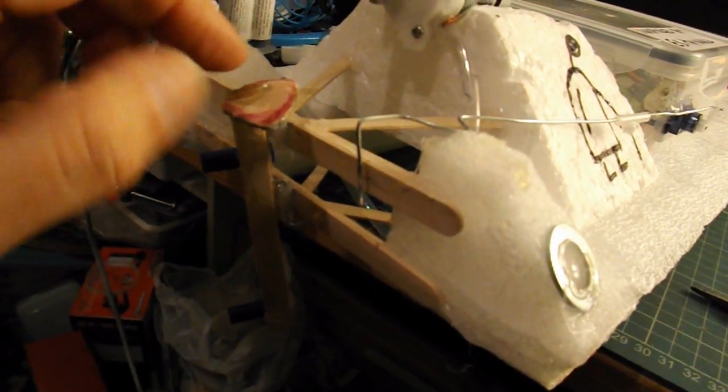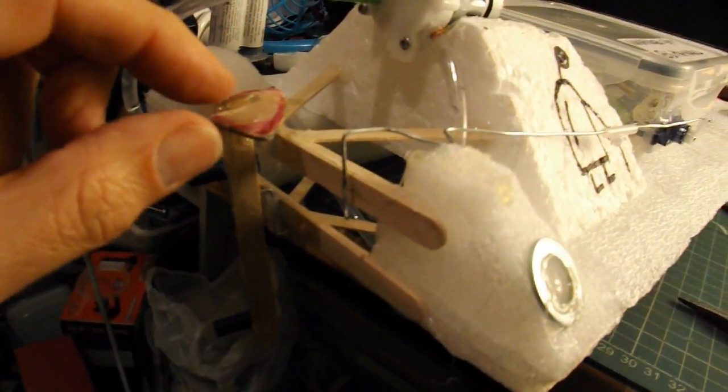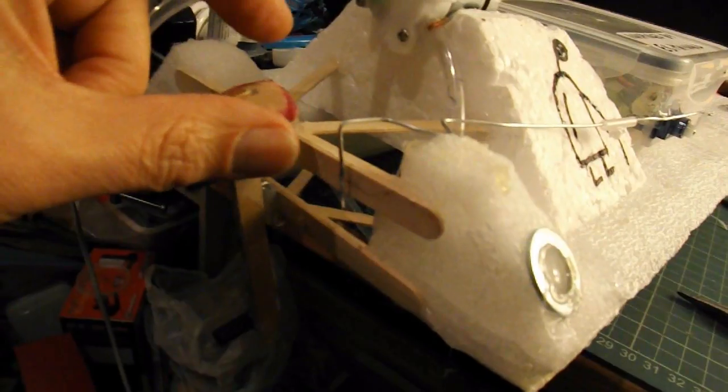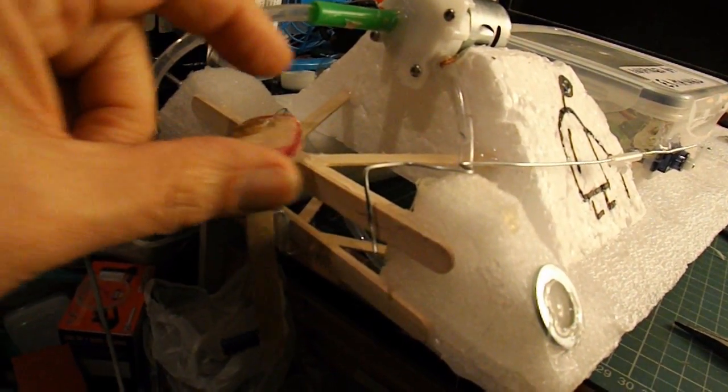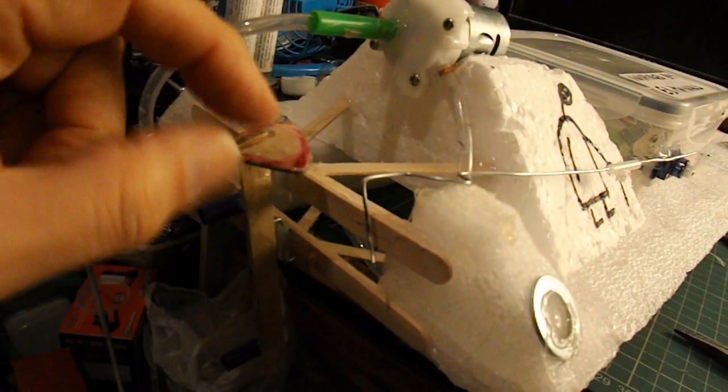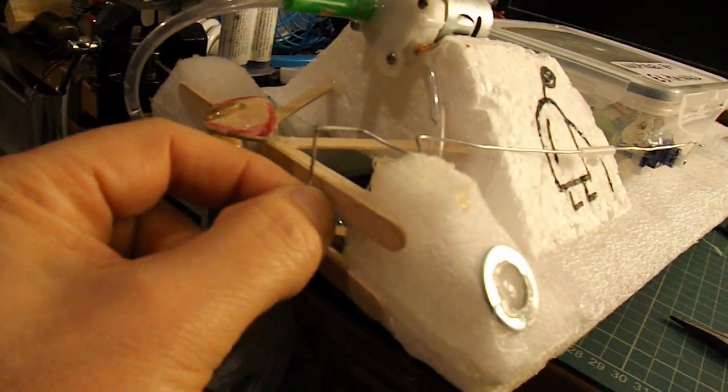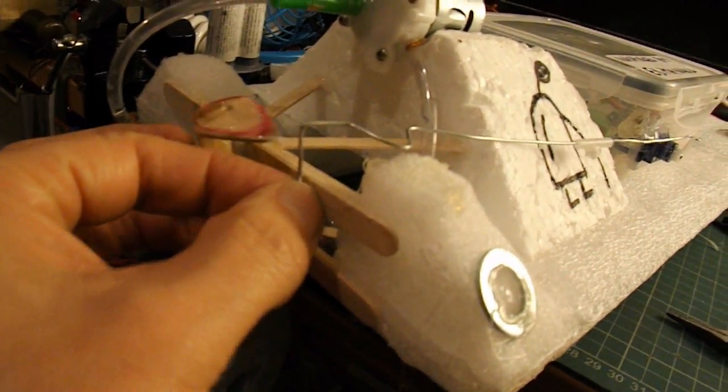And I've used 2-pack epoxy to glue a rudder horn onto it. I've got to drill some holes in that so we can put the pushrod in place.